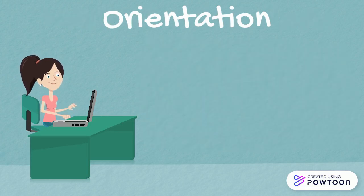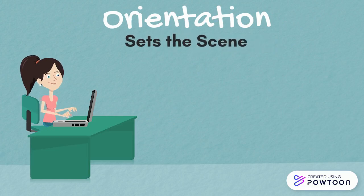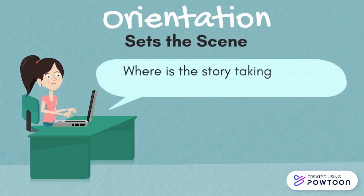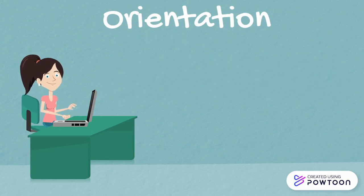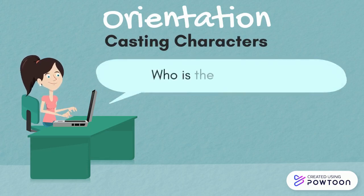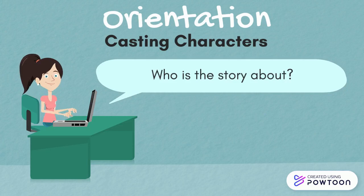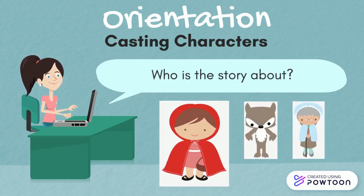The orientation is where the storyteller sets the scene. This involves answering two central questions: where is the story taking place, and when is it taking place? Casting characters is another important part of the orientation, and answers the question, who is the story about? In short stories, there is often only one main character, with a few secondary characters.